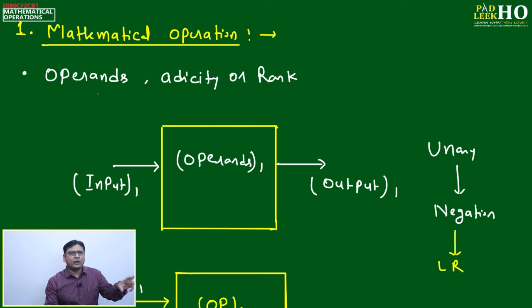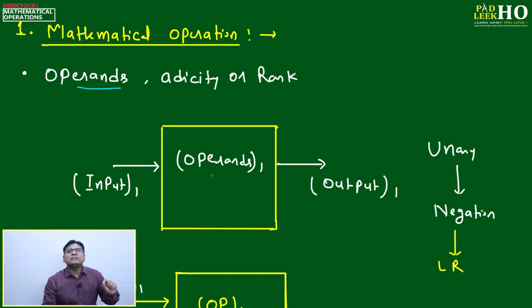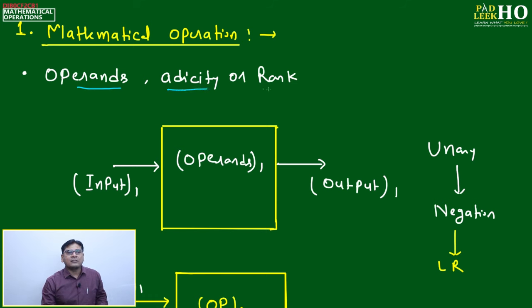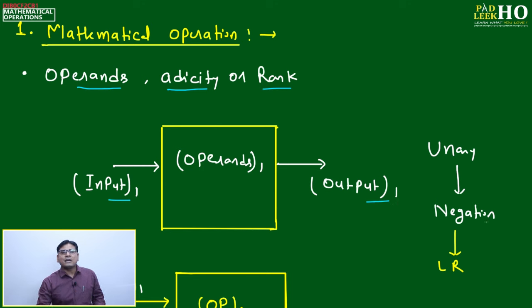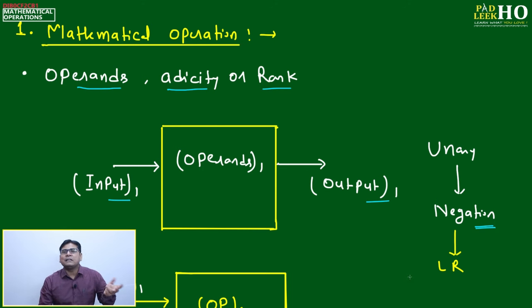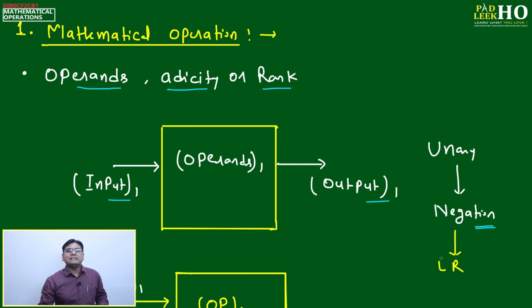Terminology-wise: an operand is what we are performing operations on — the input. Adicity or rank means how many inputs we are providing. In a unary system there is only one operand, one input, and one output. The only thing you can do in a unary system is negation — negation means putting 'not' in place of something, like 'you can go to the USA' becomes 'you cannot go to the USA.'